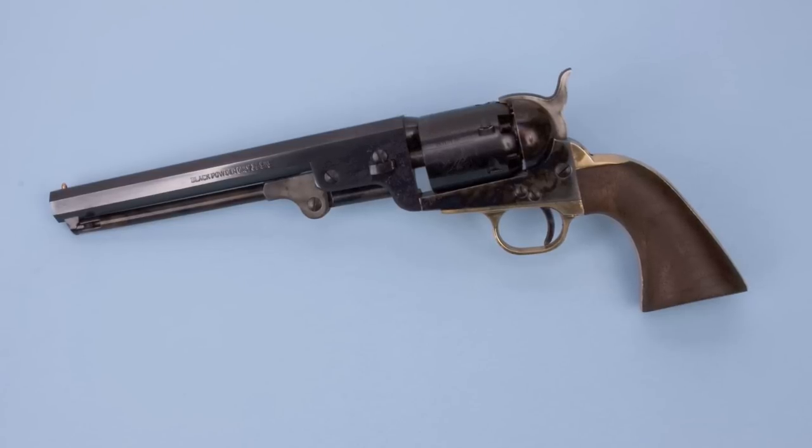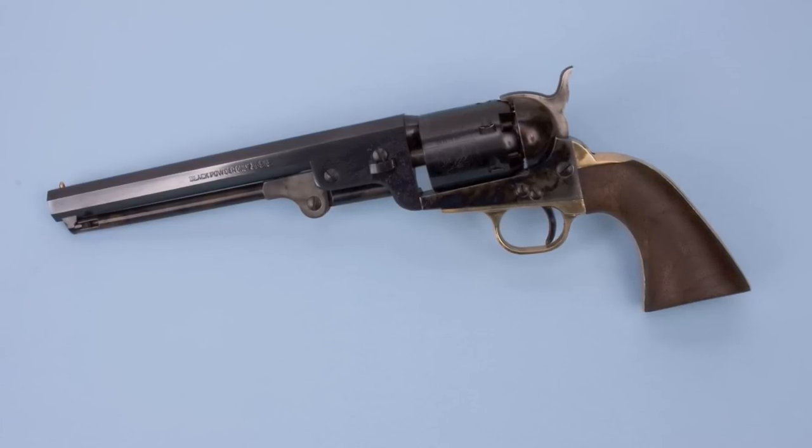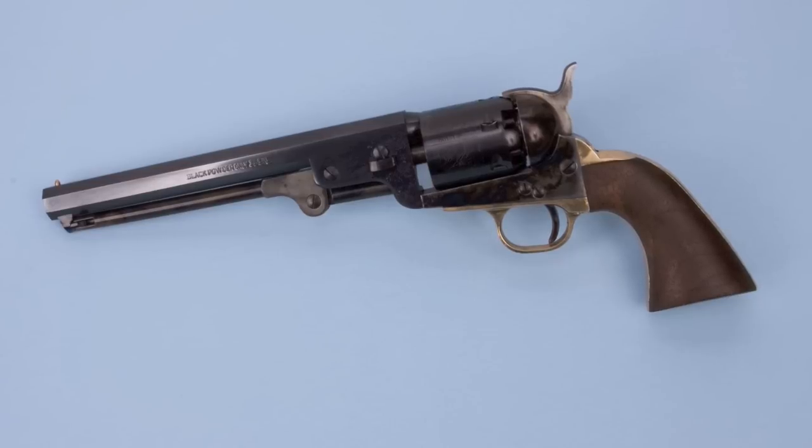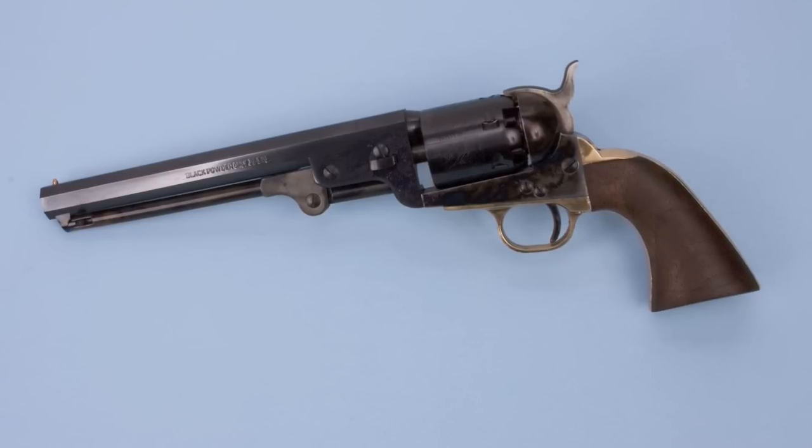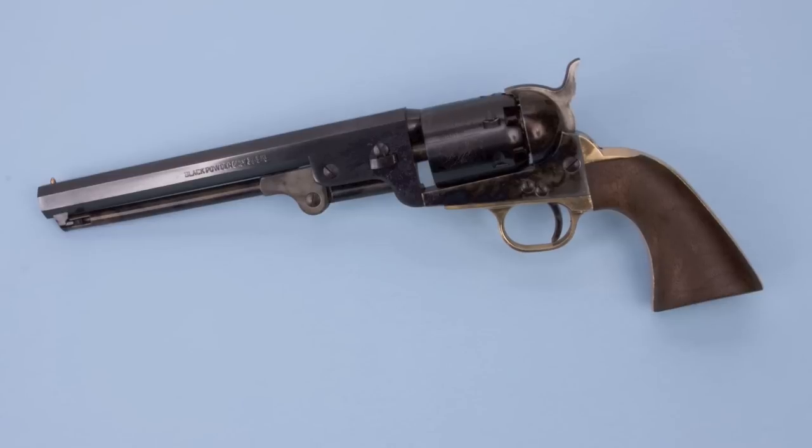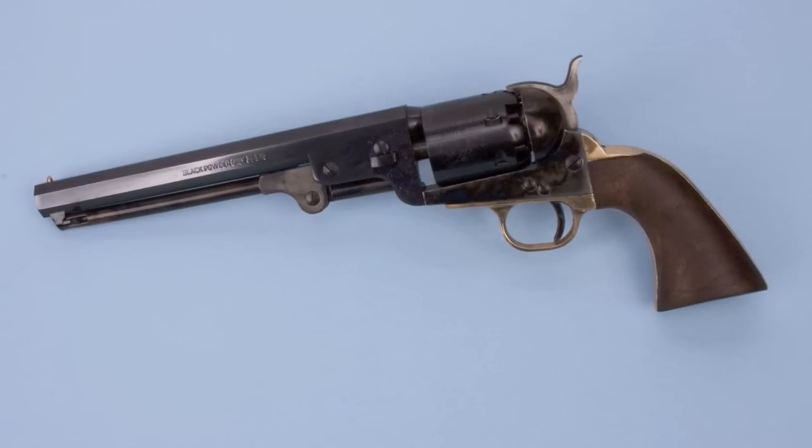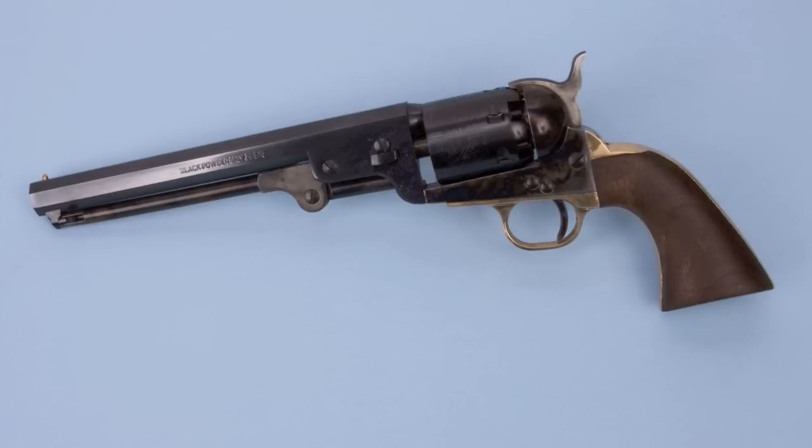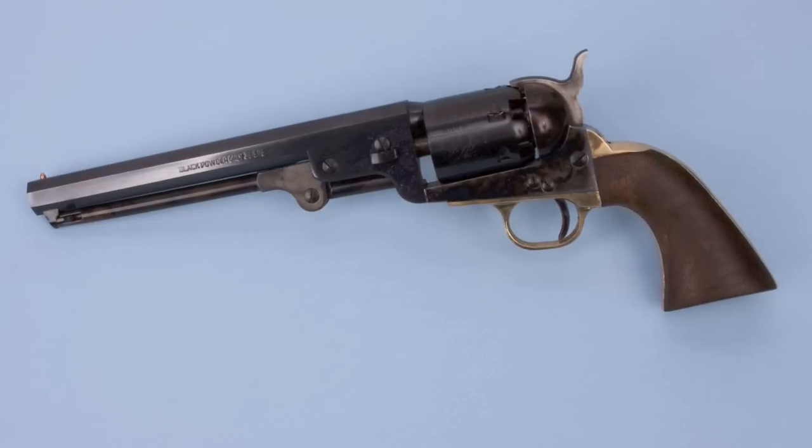In part one, we showed you how to remove the wedge and break the Colt down into its three main component groups. Then we showed you how to disassemble the barrel assembly, pull off the nipples, and clean the barrel and cylinder assembly. Now we're going to show you how to take the frame and lock work apart, clean that, and reassemble the gun.